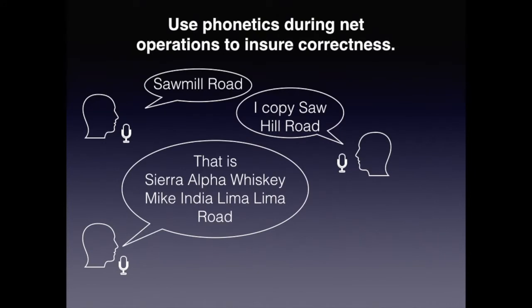Communications can be difficult under ideal circumstances. During emergencies, conditions are less than ideal. Operators may be tired from working hours on end, band conditions could be noisy, or there could just be chaos due to the nature of the disaster. The use of phonetics ensures correctness. A location such as Saw Mill Road might be copied as Saw Hill Road, but spelled phonetically — Sierra Alpha Whiskey Mike India Lima Lima Road — there is much less room for error.